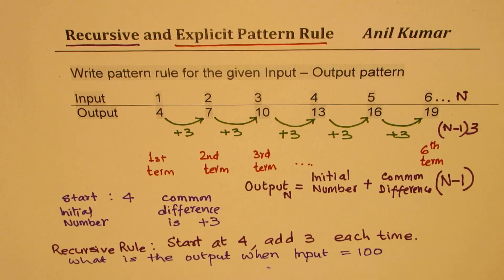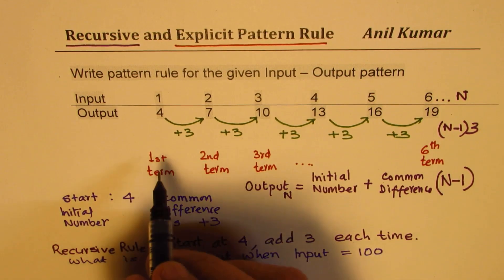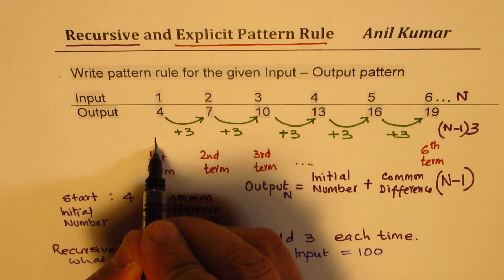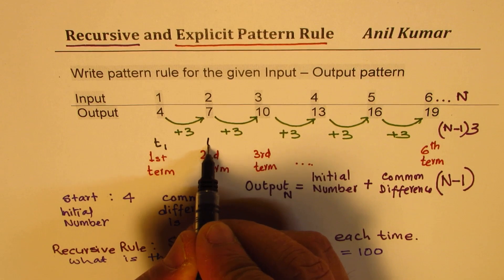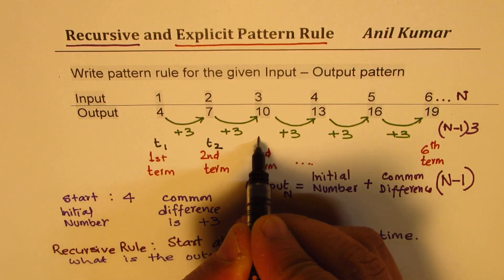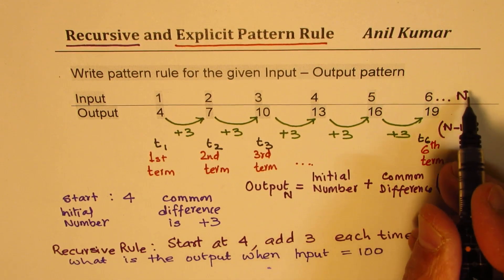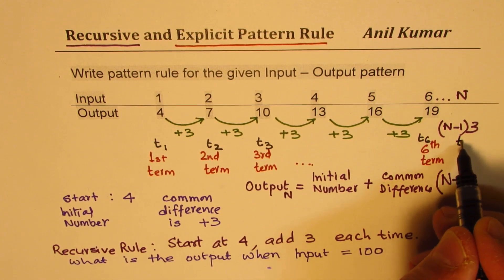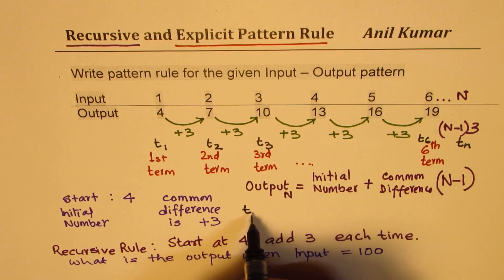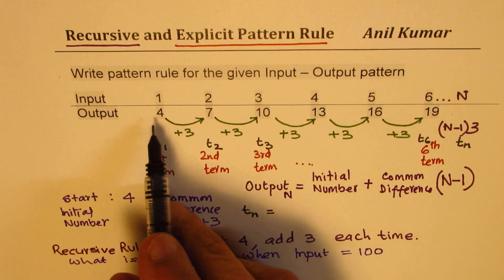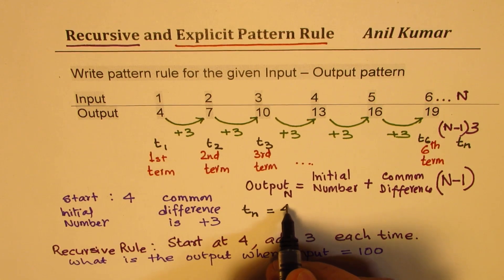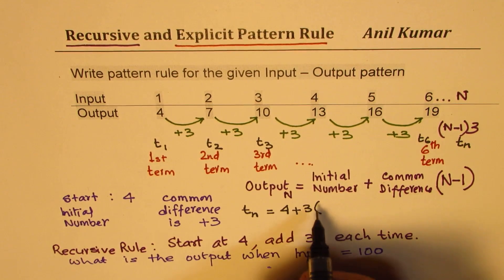So in this particular example, we can write term number is written with t. So we call this as t1. We'll call this as term number 2. This is term number 3. So this will be called term number 6. And nth term will be called tn. So we can write term number n, tn, is equal to, in our case, 4, the initial number, plus 3 times n minus 1.